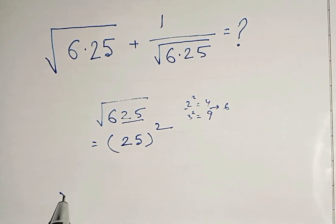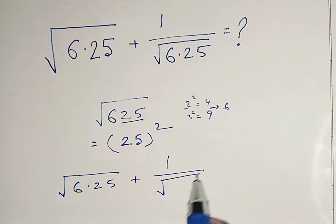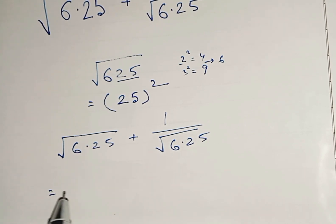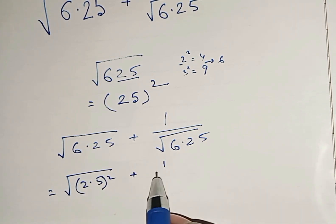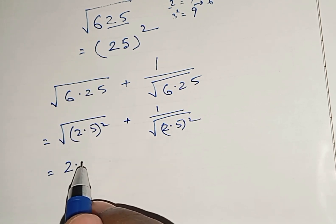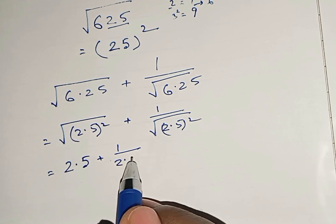The problem is root of 6.25 plus 1 by root of 6.25. So that equals what? That equals root of 2.5 whole square plus 1 by root of 2.5 whole square. Now, the square and root will be cancelled, so it's 2.5 plus 1 by 2.5.